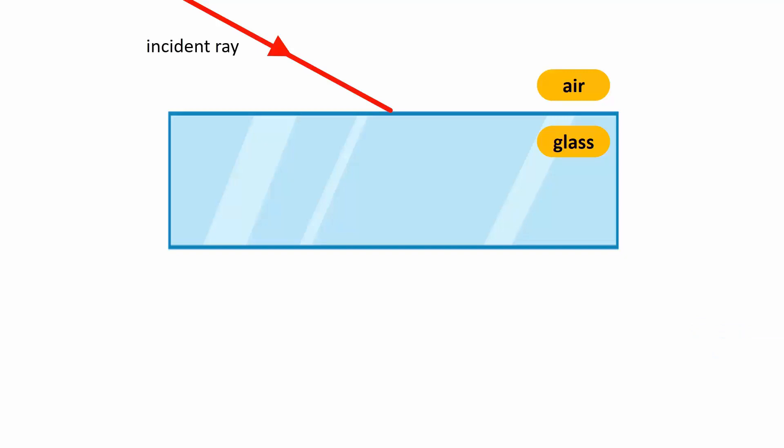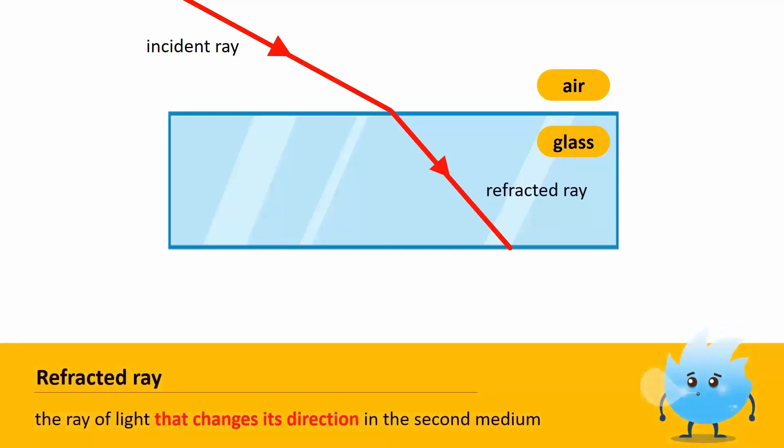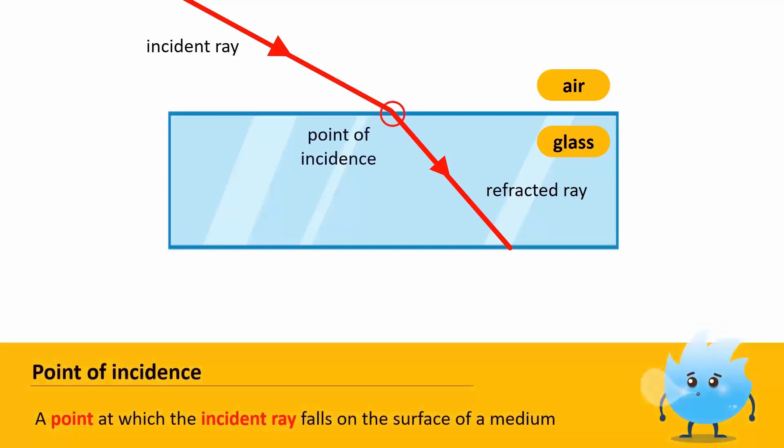The ray of light that changes its direction in the second medium is called a refracted ray. The point at which the incident ray falls on the surface of a medium is called the point of incidence.